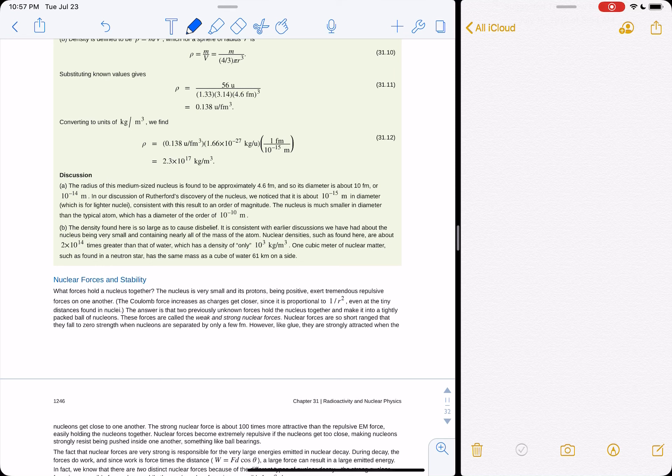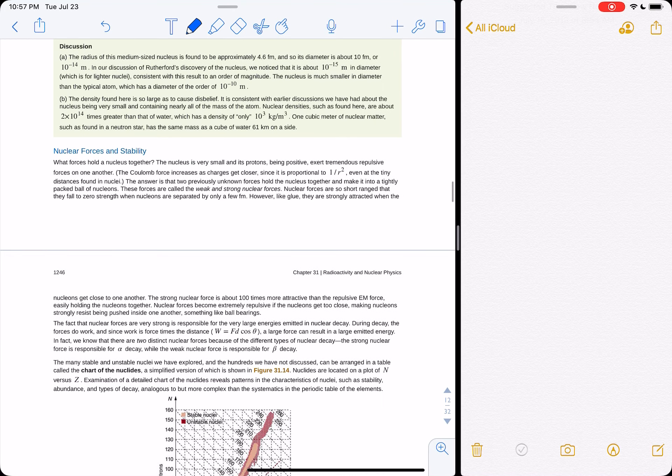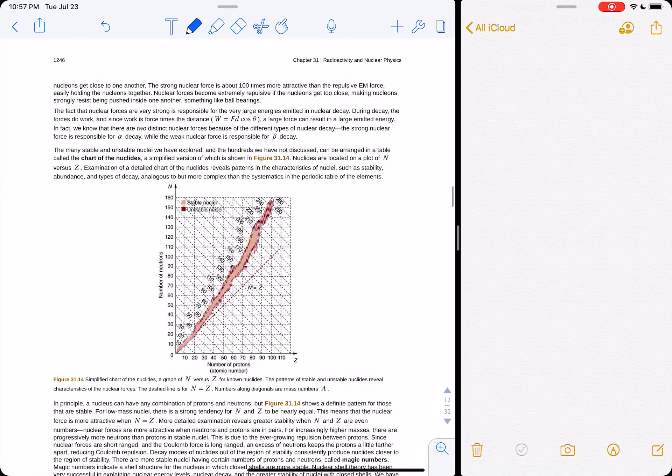Okay, so the density found here is so large as to cause disbelief. It is consistent with earlier discussions we have had about the nucleus being very small and containing nearly all the mass of the atom. Nuclear densities such as found here are about 2 times 10 to 14 times greater than water in general. So yeah, so most of your mass is at the nucleus. That's the point of that. So as far as stability is concerned, this chart of the nuclides is the famous plot.